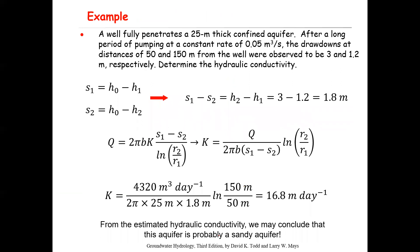Here is an example. A well fully penetrates a 25-meter thick confined aquifer (b = 25 m). After a long period of pumping at a constant rate of 0.05 m³/s — meaning steady state has been established — the drawdowns at distances of 50 m and 150 m from the well were observed to be 3 m and 1.2 m respectively. The question asks to calculate the hydraulic conductivity of this aquifer.